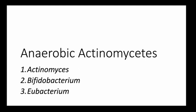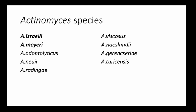The anaerobic actinomyces include the genera Actinomyces, Bifidobacterium, and Eubacterium. The species in bold are what you need to remember: Actinomyces israelii and Actinomyces meyeri. The others have been isolated, but are not as important — make sure you at least remember those two bold species.